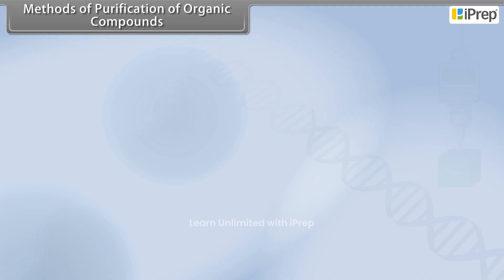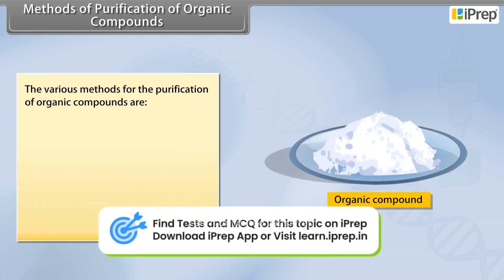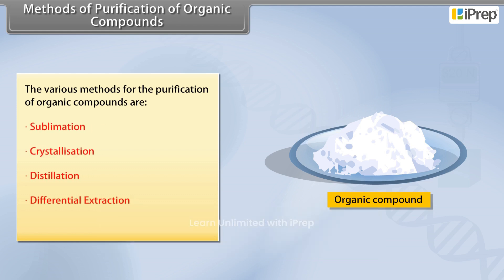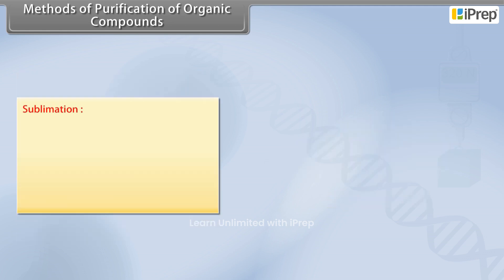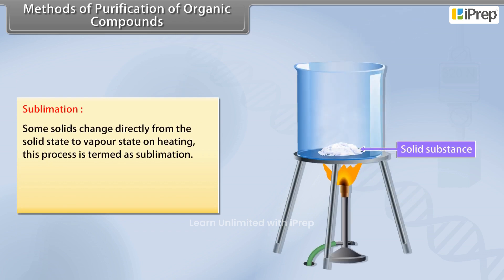Methods of purification of organic compounds: the various methods for the purification of organic compounds are sublimation, crystallization, distillation, differential extraction, and chromatography.